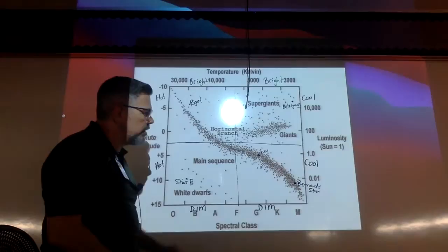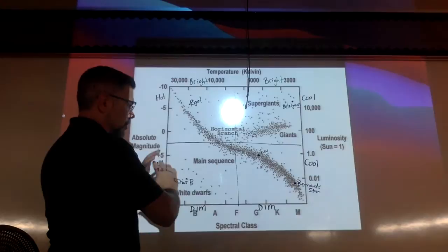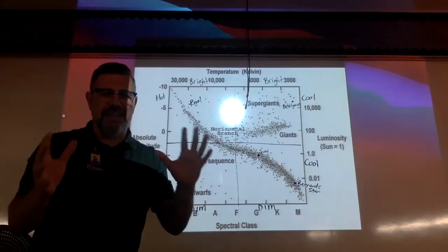First thing you need to understand is that the HR diagram measures two things. It measures temperature and it measures brightness, and they have different names for those. So make sure you're taking notes of this.